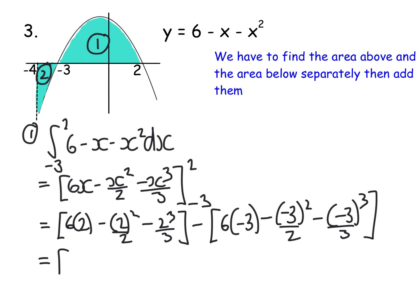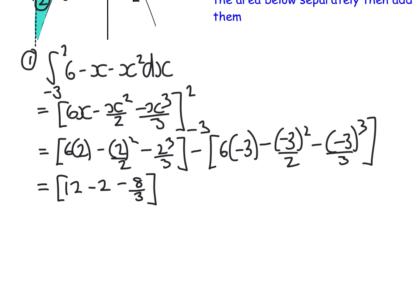Right, 6 times 2 is 12. 2 squared is 4. Divided by 2 is 2. 2 cubed is 8. So that gets to stay as 8 over 3. Now what you can do is just while your head's in the game of this side. That's 10 take away 8 over 3. That 10 is a bit like 30 over 3. Take away 8 over 3. So this side gives us 22 over 3.